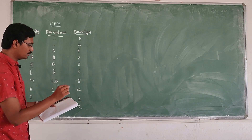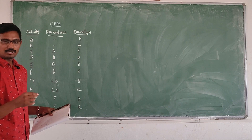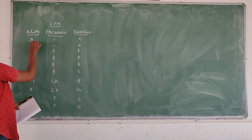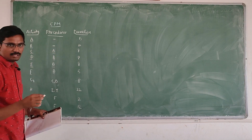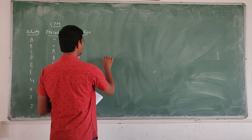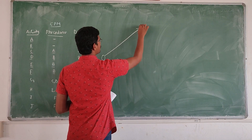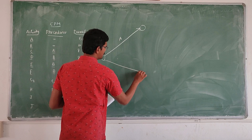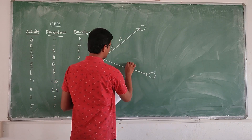First we have to draw the network path, and after that we can find out the critical path and critical duration. We can draw A and B first because there is no precedence for both A and B activities.